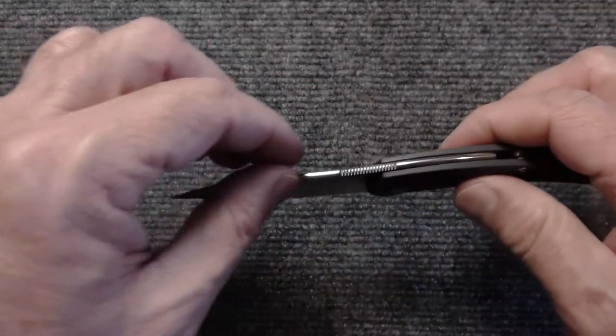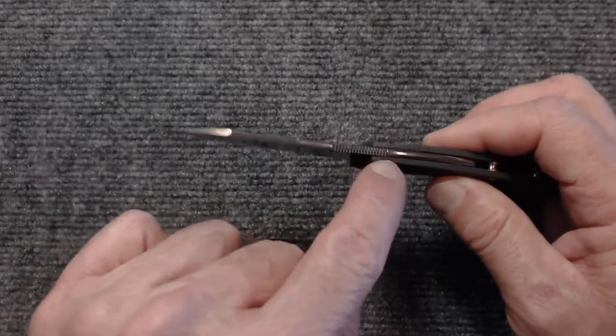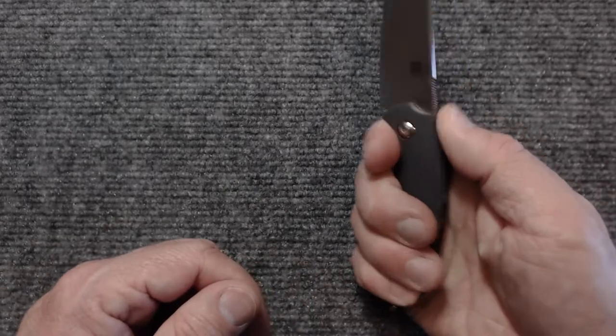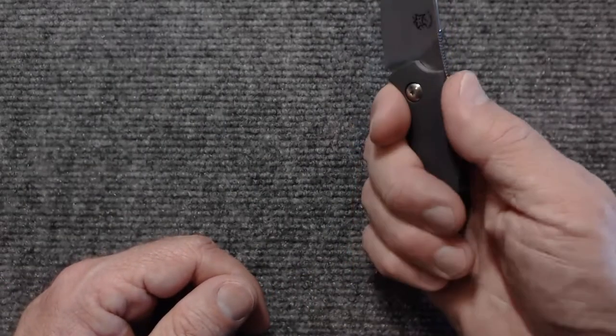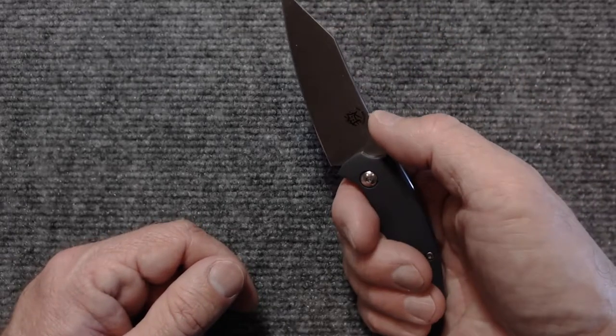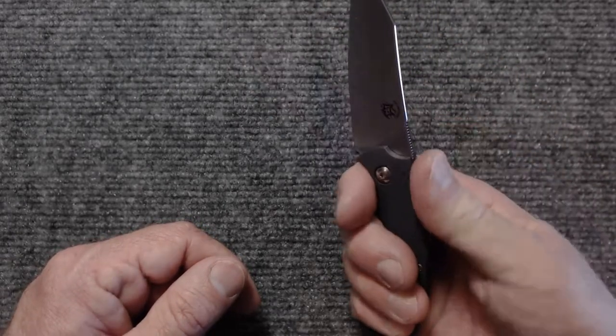The tang of the knife has some jimping along the back here. Now I personally think that jimping probably should be further back, just because where it's at on the knife, if you press there you're actually going to close it a little bit.